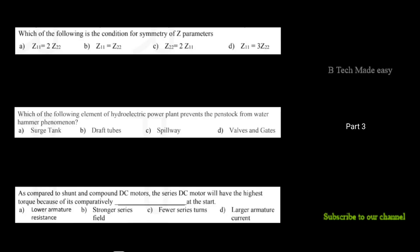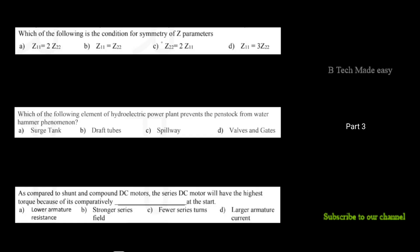Let's start with Part 3. The first question is: which of the following is the condition of symmetry of z-parameters? For transmission line port parameters, all z-parameters and y-parameters — the condition for symmetry is z11 is equal to z22.